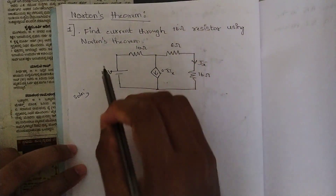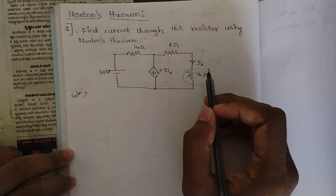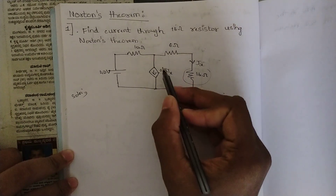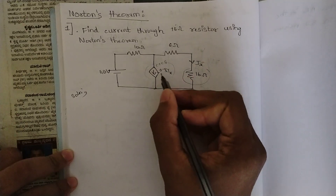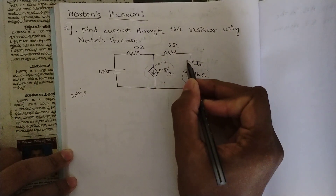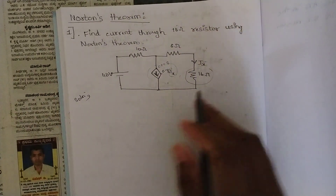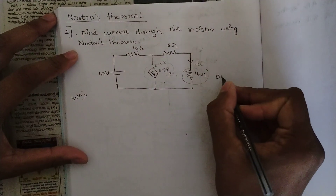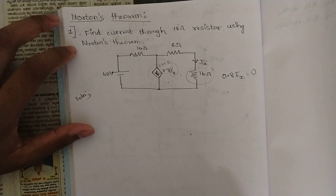Now here is the first problem related to Norton's theorem: find the current through the 16-ohm resistor using Norton's theorem. They have given one dependent source — a current-controlled current source (CCCS) — where the controlling current is IX, which flows through the 16-ohm resistance branch. Let's analyze this circuit. We can conclude that 0.8 IX equals zero — let's understand why.